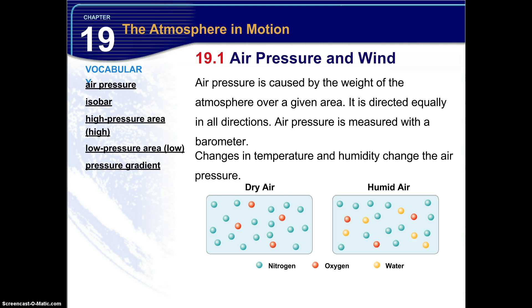Now changes in temperature and humidity change the air pressure. Humid air is lighter than dry air. So you have a low pressure system on the surface of the planet. This is because water molecules are less massive than oxygen, O2, and nitrogen, N2 molecules. So dry air would be considered a high pressure system.